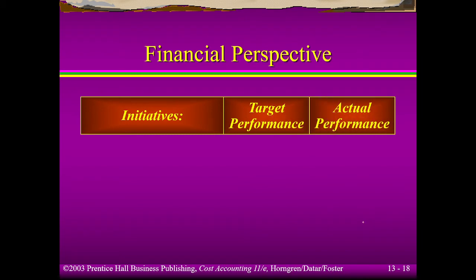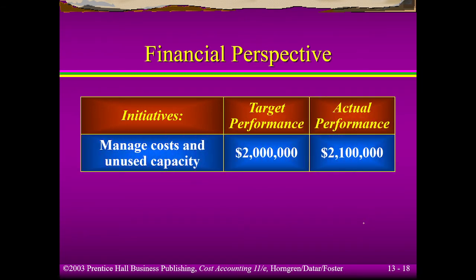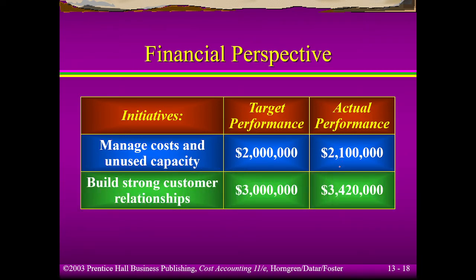How can we achieve that? We need to manage cost because we would like to have cost leadership, and make sure we fully utilize unused capacity. So the target of 2 million became 2.1 million, and because you have better performance and you build stronger customer relationships, you are able to increase from a target of 3 million to 3 million 420 thousand.